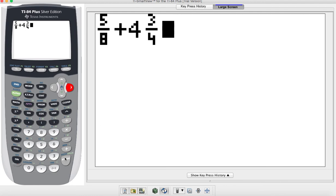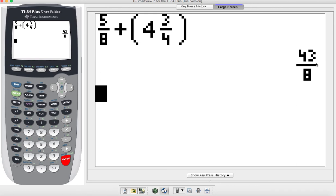Okay. So if I wanted to add those together, all I have to do is add them and hit enter. Now I have an improper fraction for my answer. It's 43 over eight.